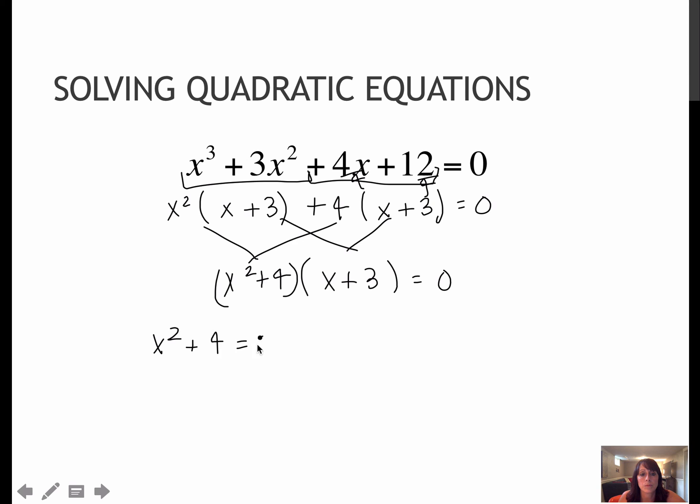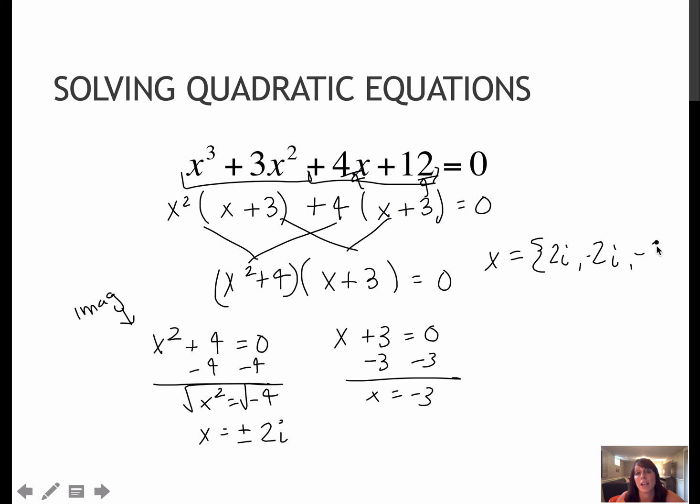Setting this equal to 0 and setting this equal to 0 will give me my zeros. What's going to be different here is we're going to end up with some imaginary solutions on this one. So subtracting 4 from each side gives me x squared equals negative 4. Taking the square root of each side gives me x equals plus or minus 2i, so imaginary solutions. Over here I would subtract the 3 and get negative 3. So my solutions would be positive 2i, negative 2i, and negative 3.